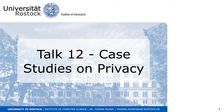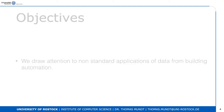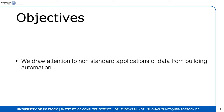Hello again, Thomas here. This is talk number five: case studies on privacy. The content covers physical intrusion detection — trying to find out whether there are people walking through the building who are not supposed to be there — proper hand-washing, and methodology of data mining in building automation systems. The objectives are to draw attention to non-standard applications of data from building automation, where everything involving human behavior is in focus.